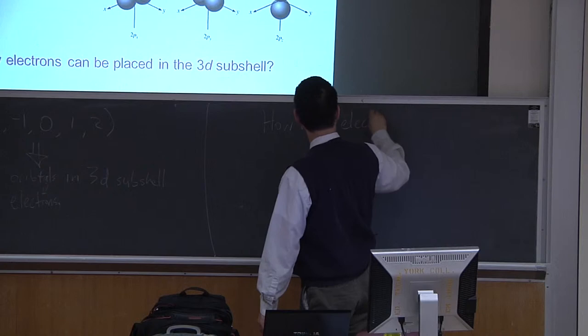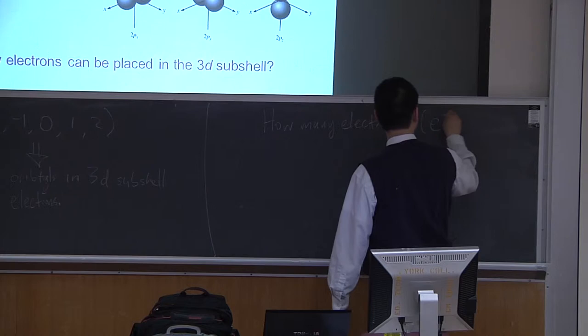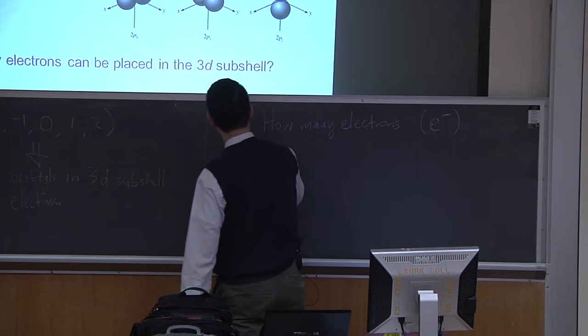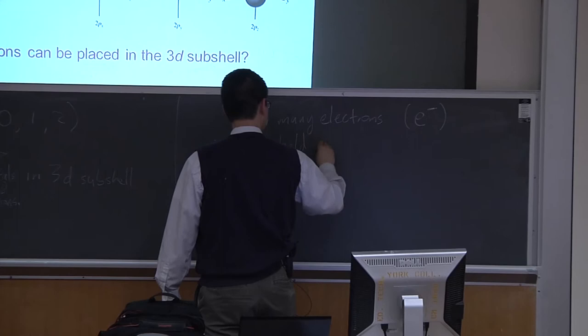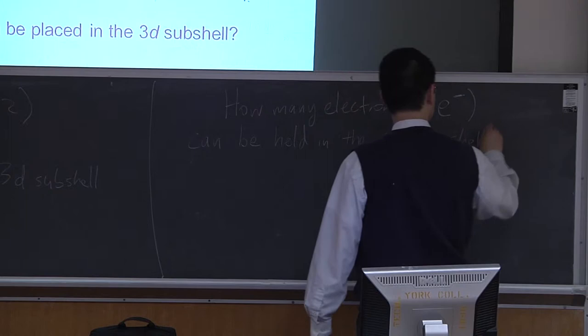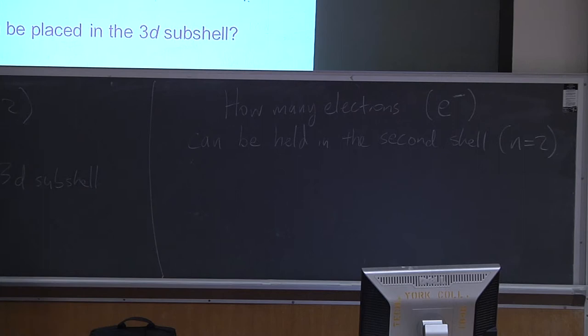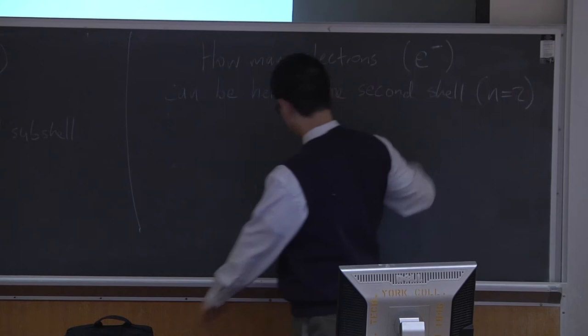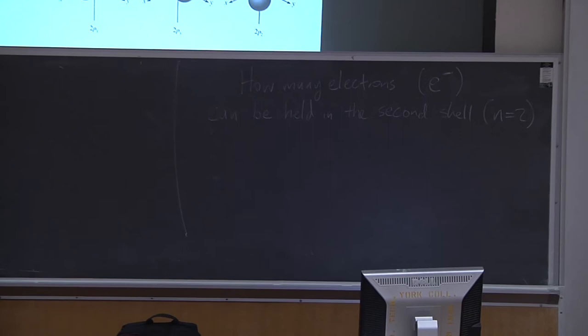Let's try another one. How many electrons can be held in the second shell, n=2? Put your heads together and reason through it. For n=2, we need to count how many orbitals are in the second shell.